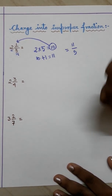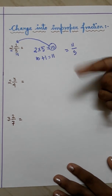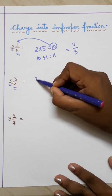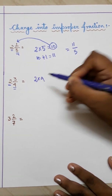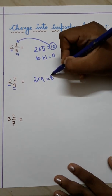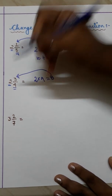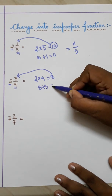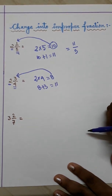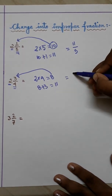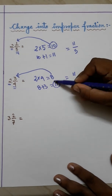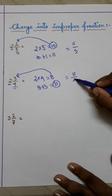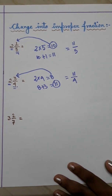In the second example, multiply the whole number by the denominator: 2 into 4 equals 8. Add 8 to the numerator: 8 plus 3 equals 11. So the answer is 11 by 4.